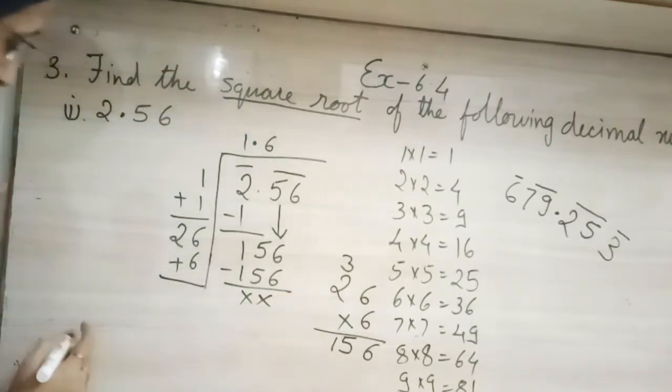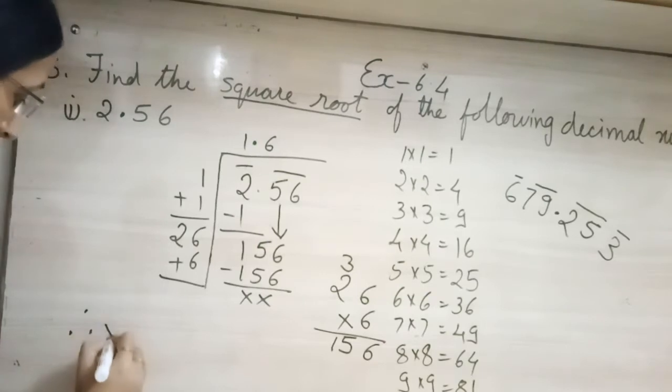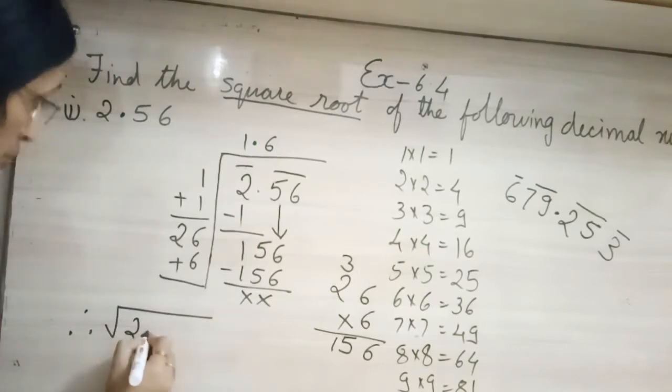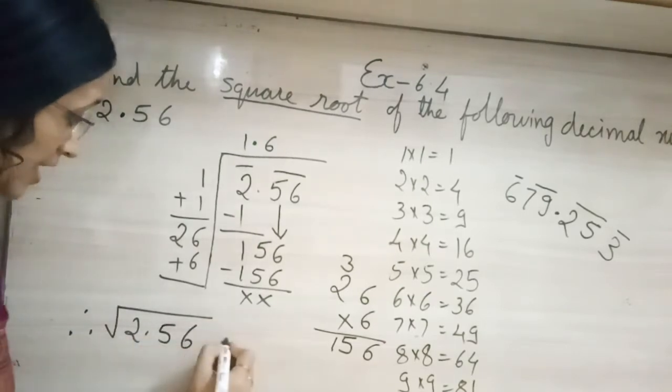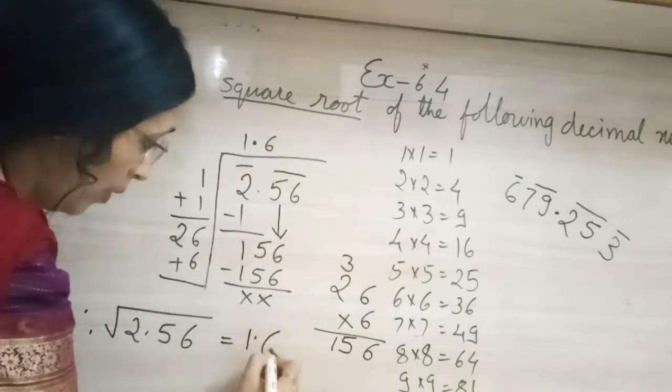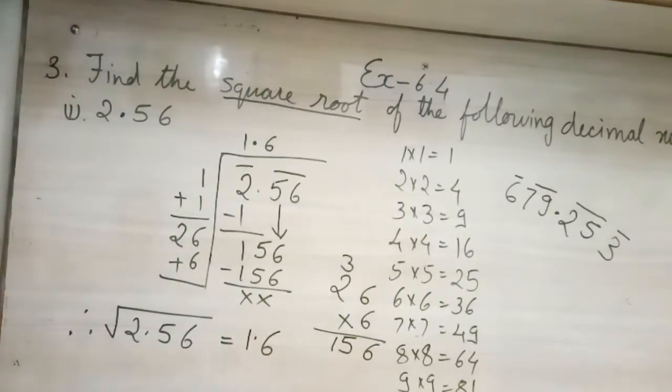So no need to add. So what we will write? Therefore, square root of 2.56 is equal to 1.6. Clear.